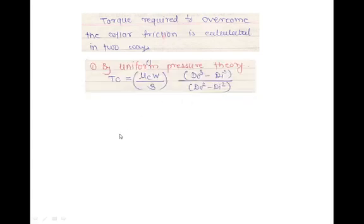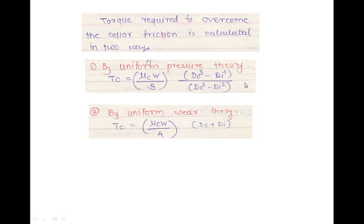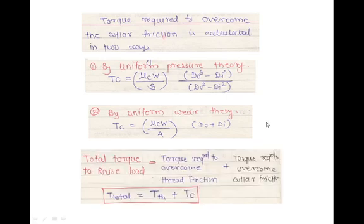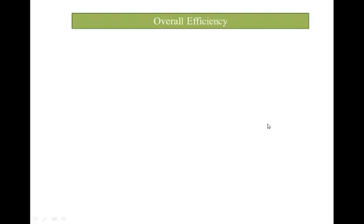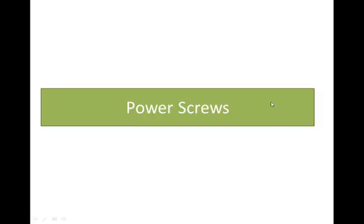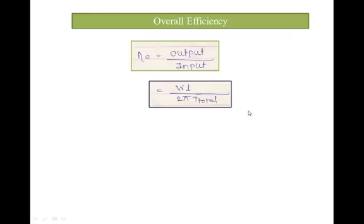The torque required to overcome the collar friction is calculated in two ways. First, using uniform friction theory: TC = μC·W/3·(D0³ − Di³) / (D0² − Di²). Second, using uniform wear theory: TC = μC·W/4·(D0 + Di). Whichever theory is specified in the problem, use accordingly to find the total torque. The total torque required to raise the load equals the thread friction torque plus the collar friction torque. Efficiency is calculated as output divided by input, giving W·L / (2π·T_total).